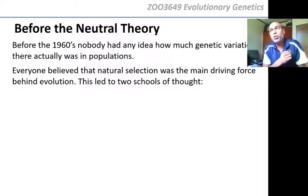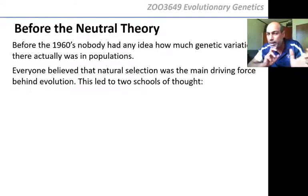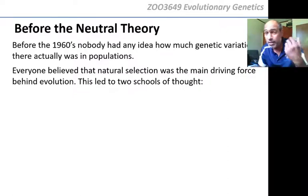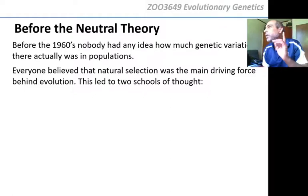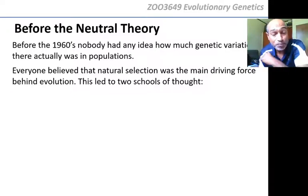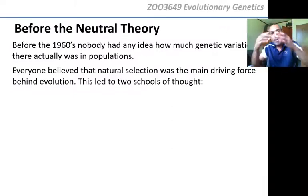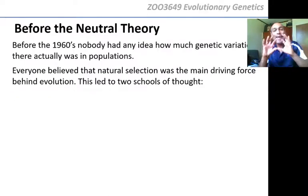Evolution was still very much something associated with Darwin's idea of natural selection, or sexual selection. The other forces of evolution were not really considered. Wright came with genetic drift years before the 1960s — already in the 1920s and 30s. But nobody thought that drift could play such an important role, or a more important role than selection. After all, it's survival of the fittest — that is what natural selection is saying, and that is how evolution works.